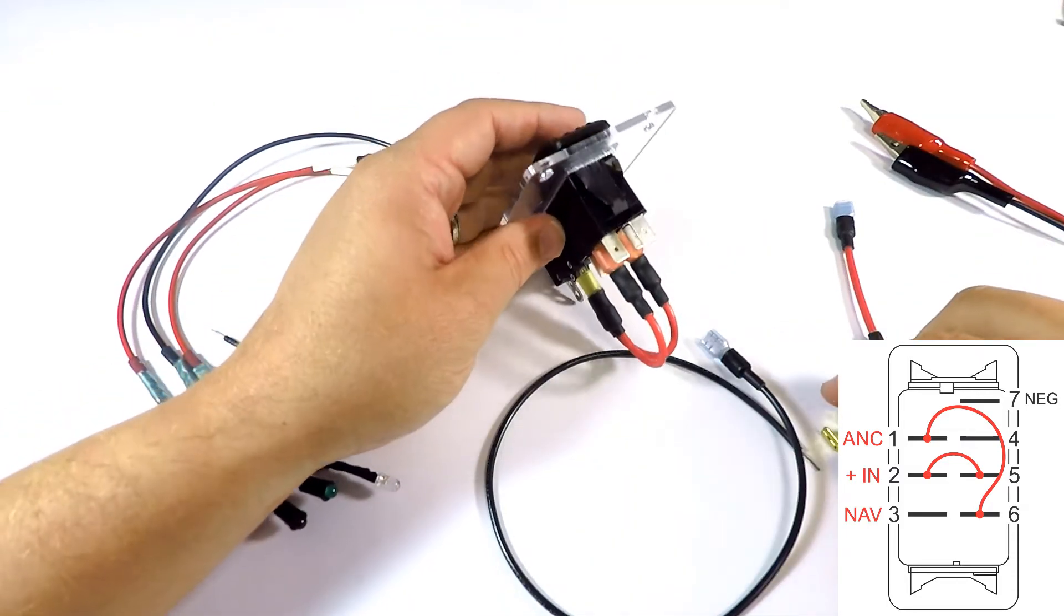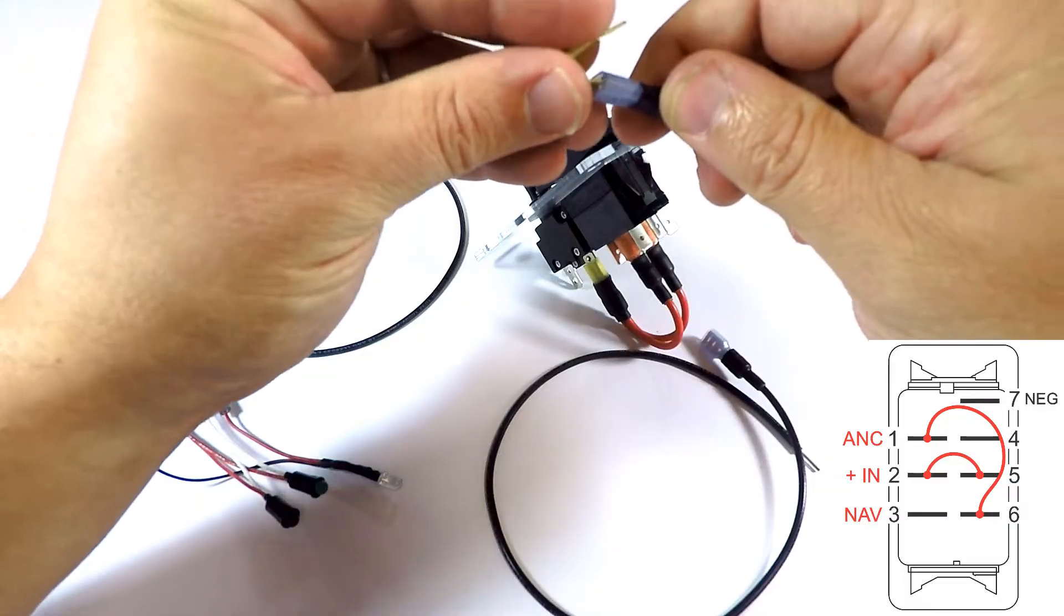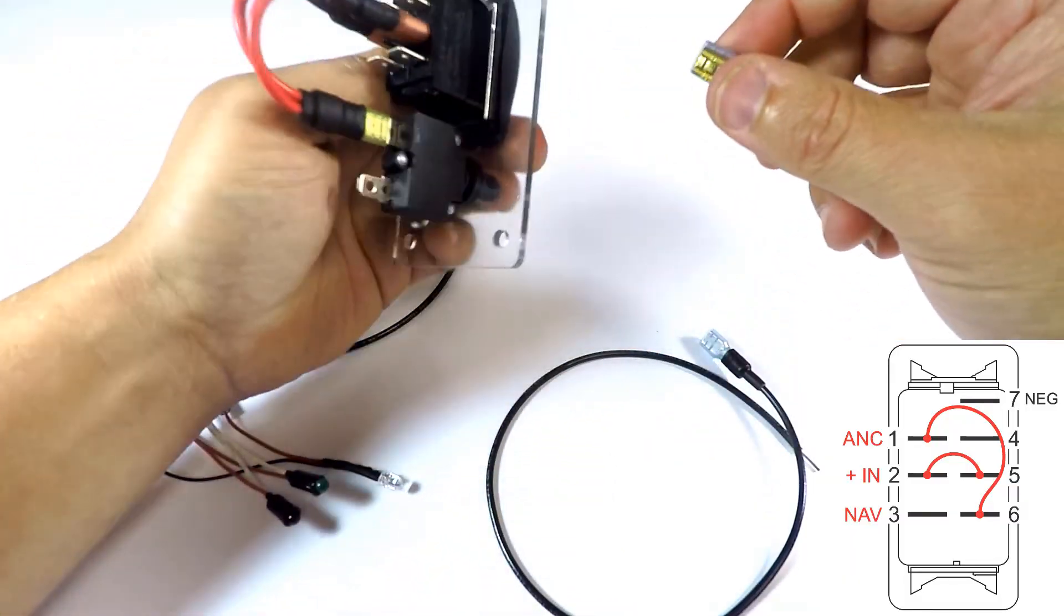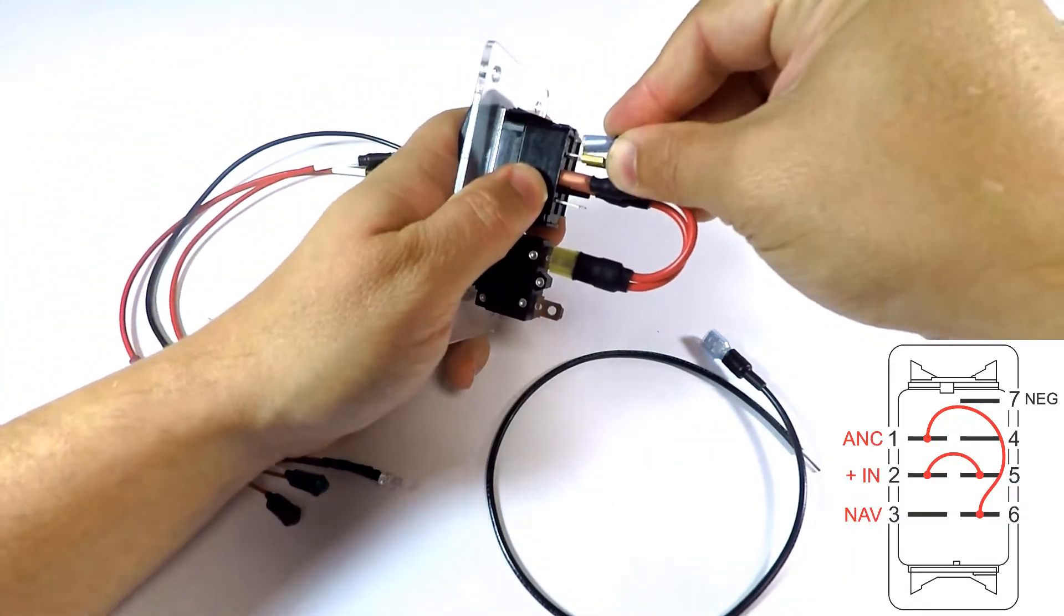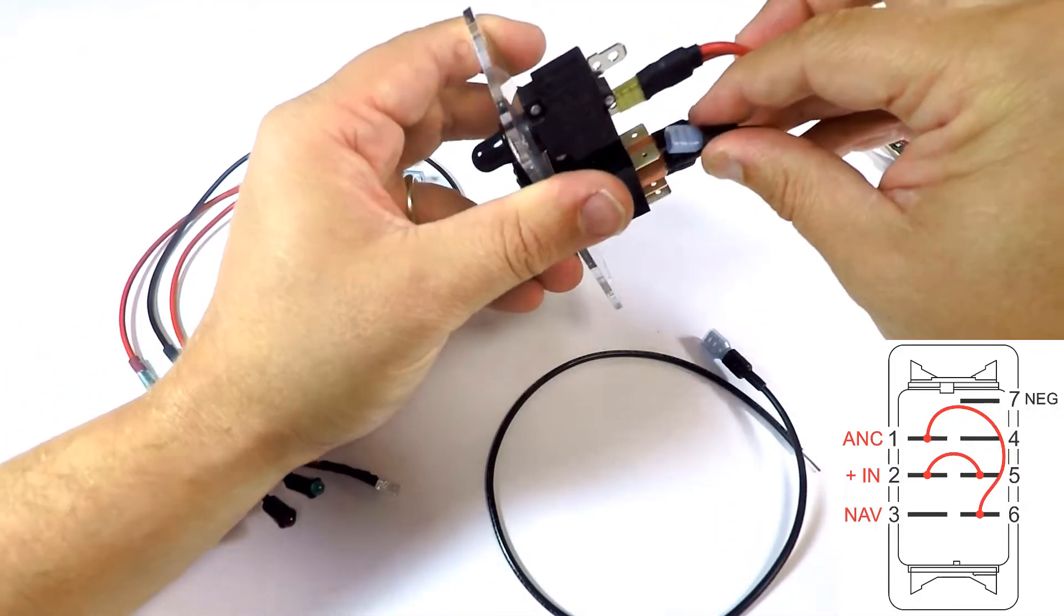The second jumper will go from terminal 1 to 6. To make that happen, because we're also going to have to come out of this to the anchor light, we'll use this piggyback and jump 1 to 6 right there.